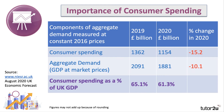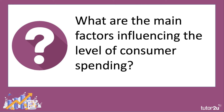If we express consumer spending as a percentage of GDP or aggregate demand, we can see that it was 65% in 2019 — in other words, two-thirds of aggregate demand — whereas in 2020, the slump in consumer spending is expected to drive that figure down to just over 61%. So what are the main factors influencing the level of consumer spending?